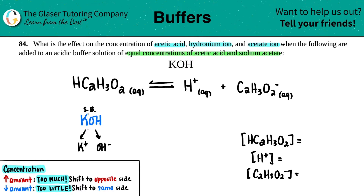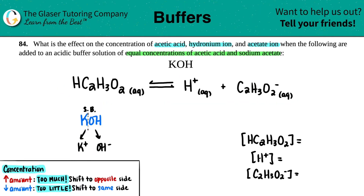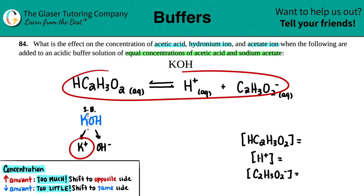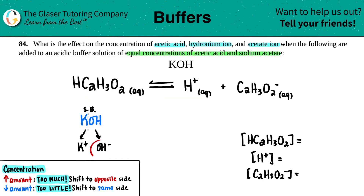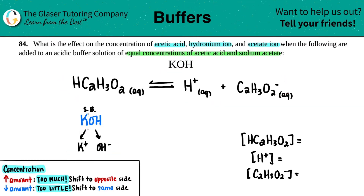Hopefully the easiest way is that one of these ions would show up in your balanced equation, but K⁺ isn't there and OH⁻ isn't there either. A lot of students would say, since both of them aren't here, it's no effect, no change — but there's a trick.